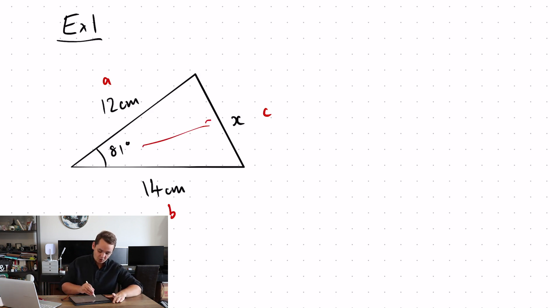The angle that is opposite my side C is capital C. So let's put this into the formula. C squared equals A squared plus B squared minus 2AB cos C.